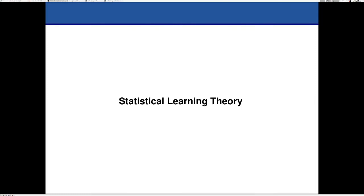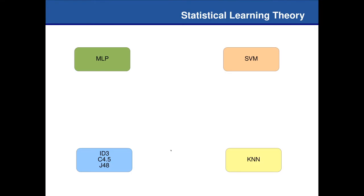Now we start with statistical learning theory. Let's consider six different algorithms: the multilayer perceptron, the support vector machine, k-nearest neighbors, ID3, C4.5, and J48. All those algorithms are supervised learning algorithms.